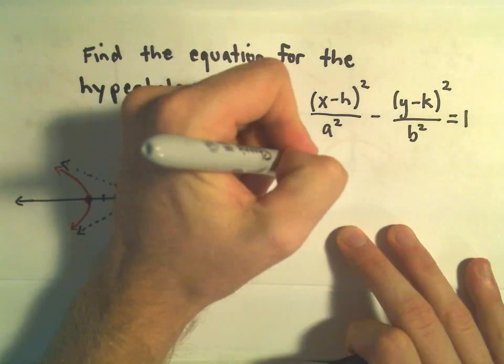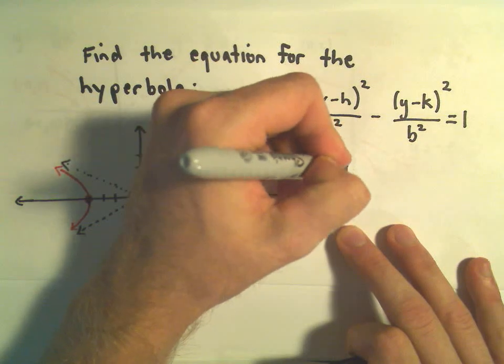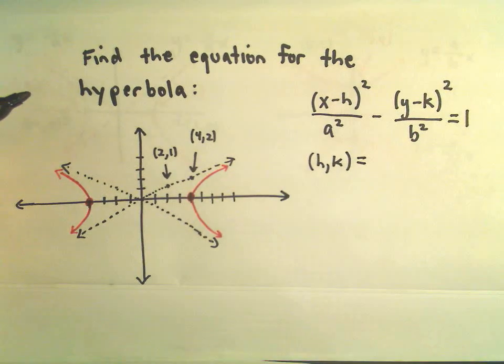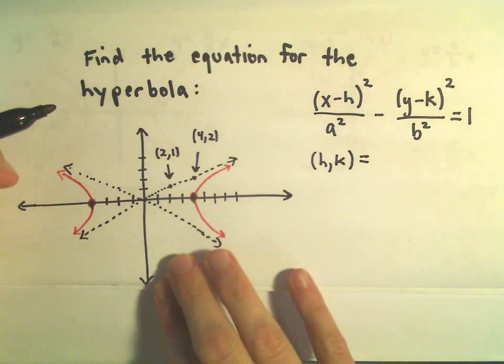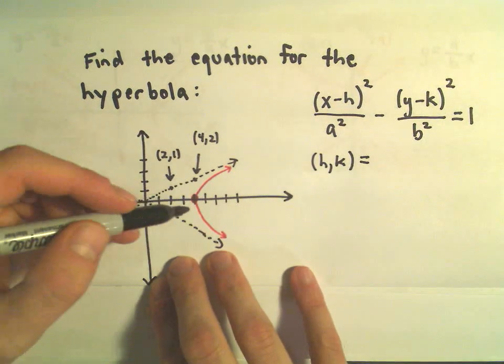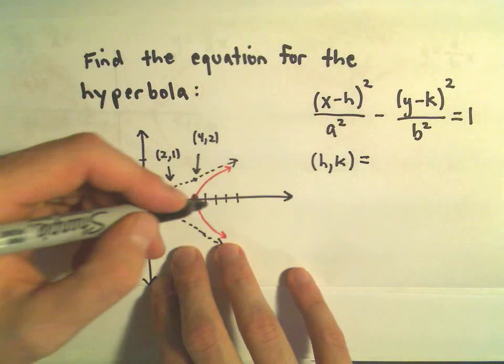H and k is going to be the point where your asymptotes are intersecting. It's going to be the point equidistant from the vertices. So, to me it looks like the vertices here are 1, 2, 3.